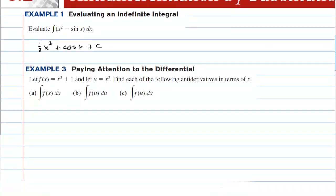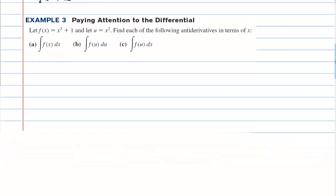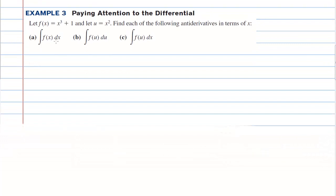In example number 3, we're going to pay attention to the differential — the dx, the du, and the dx in each of these. We're going to let f of x equal x to the third plus 1, and we're going to let u equal x squared. If we want to integrate f of x dx, that's the integral of x to the third plus 1 dx, and the integral is 1 fourth x to the fourth plus x plus c.